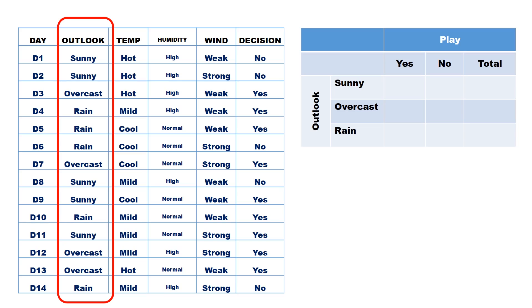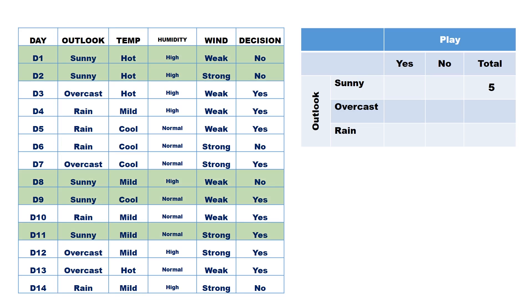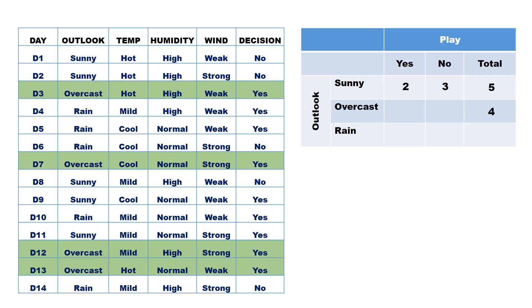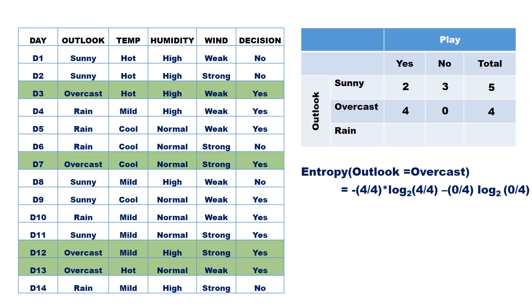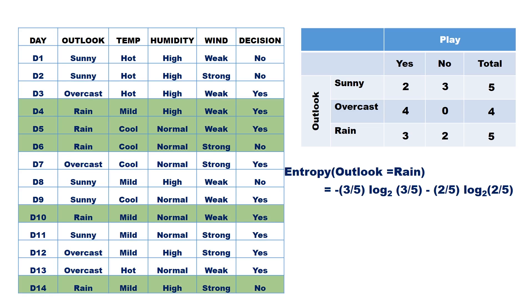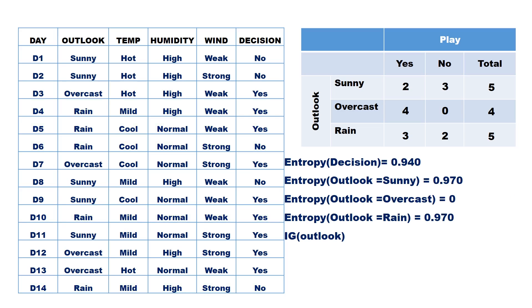Let us first take outlook. Outlook has three values: sunny, overcast, and rain. There are 5 records with outlook equal to sunny; 2 are yes and 3 are no. Entropy of outlook equal to sunny is minus (2/5) log2(2/5) minus (3/5) log2(3/5), which equals 0.971. There are 4 records with outlook equal to overcast; all 4 are yes, so entropy equals 0. There are 5 records with outlook equal to rain; 3 are yes and 2 are no, giving entropy 0.971. Information gain for attribute outlook equals 0.246.